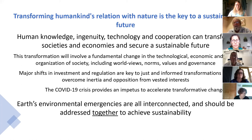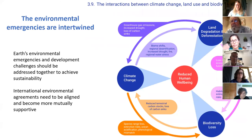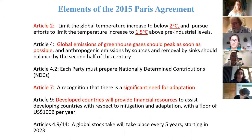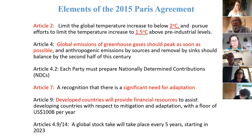The obvious message is we have to look at all of these emergencies together. Climate change is affected by loss of biodiversity and land degradation. Land degradation is affected by climate change and loss of biodiversity. Biodiversity is affected by climate change and land degradation. And all of them affect human well-being.